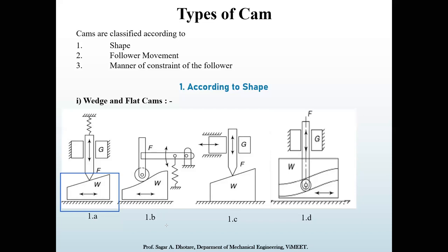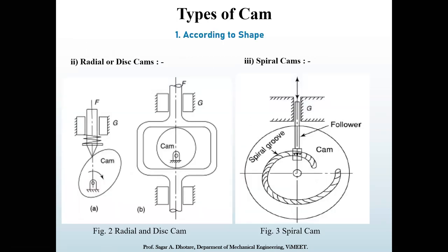The second type is the radial or disc cam. The cam in which the follower moves radially from the center of rotation of the cam is known as a radial or disc cam. These radial cams are very popular due to their simplicity of design and compactness in construction, making them the most popular cams used in mechanisms.